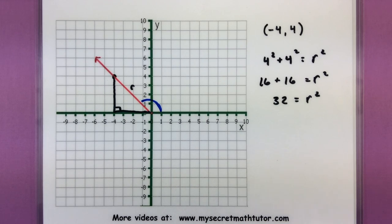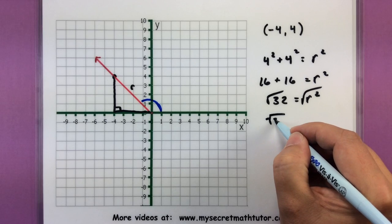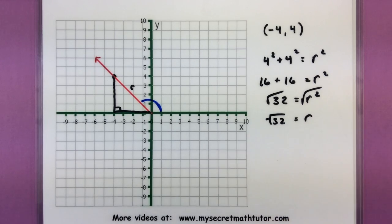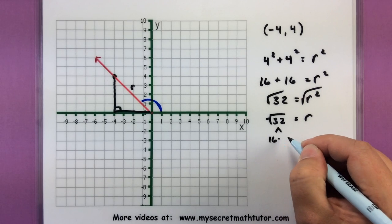And then if we want the r just by itself, we'll take the square root. So I have the square root of 32. That can definitely be simplified. This is 16 times 2.